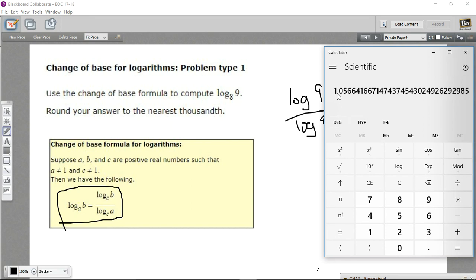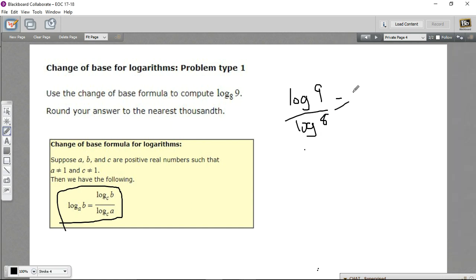Okay, and we're supposed to round this to the nearest thousandth, so this is 1.057. So this equals 1.057.